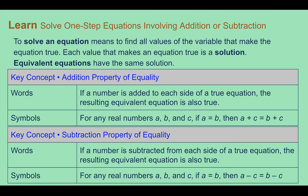First, we have the addition property of equality. The addition property of equality says that if a number is added to each side of a true equation, then the resulting equation is also true. So, as long as you add the same thing to both sides, you're not changing the answer. For example, we know that 5 equals 3 plus 2. If we were to add 4 to both sides, it's still true: 5 plus 4 equals 3 plus 2 plus 4. Adding the same thing to both sides keeps the equation true.